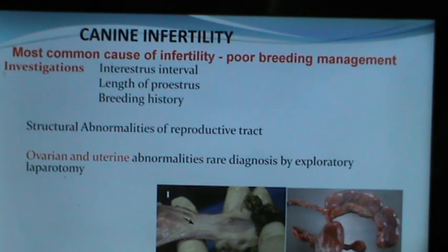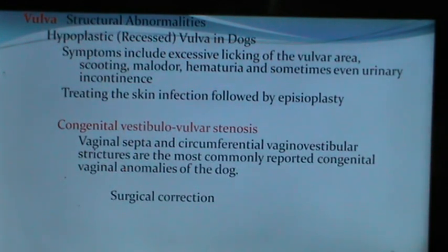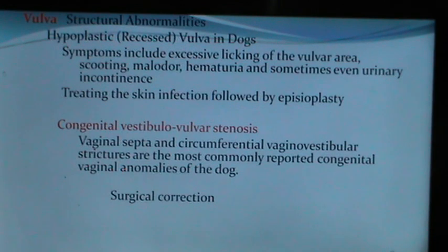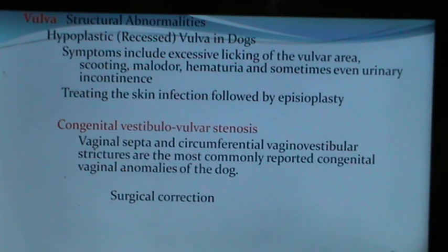Vulval problems include structural abnormalities. Hypoplastic or recessed vulva is a common problem with symptoms including excessive licking of the vulvar area, scooting, malodour, hematuria, and sometimes urinary incontinence, with skin infections around the vulva. Treatment involves managing the skin infection followed by episioplasty. Congenital vestibular anomalies include vaginal septa and circumferential vaginal-vestibular structures, which are the most commonly reported congenital vaginal anomalies. Attachments can be broken surgically and the bitch may conceive normally.